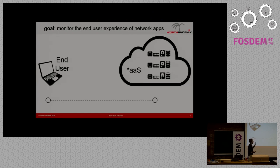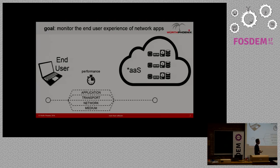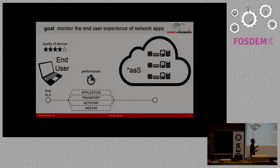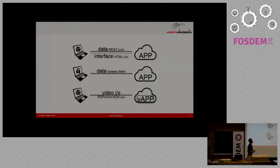The general idea is that you have general network applications in the cloud, and at the other end the end user, with the complexity of the network in the middle. At the end of the day, the end user suffers because of the performance of those applications, and our goal is to assess the perceived quality of service.